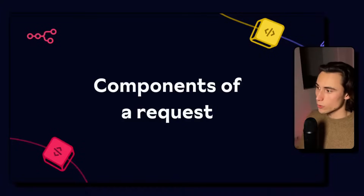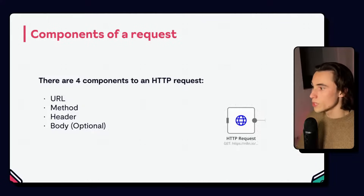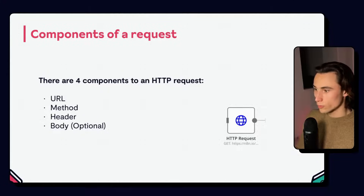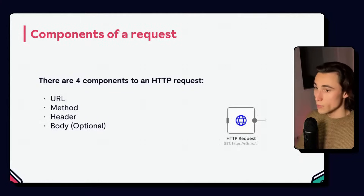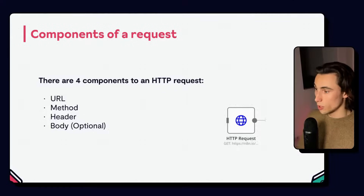When using APIs, we have, as mentioned earlier, requests and responses. We're going to break down the different components of a request and the different components of a response. Starting with a request, there are four main components to an HTTP request. In these videos, we're only going to be talking about HTTP requests. There are different frameworks to make API requests, such as GraphQL, but most of the APIs you're going to use will use the HTTP framework. Everything we're going to talk about today is mirrored in the HTTP request node, which allows you to make HTTP requests in n8n and receive the responses. The four components to an HTTP request are: the URL, the method, the header, and the body.